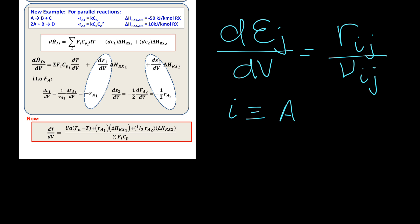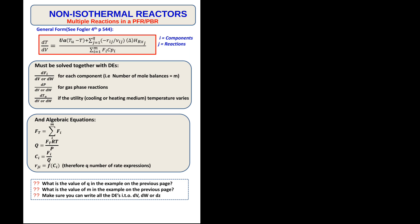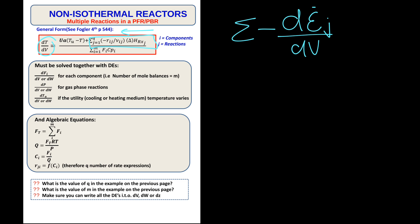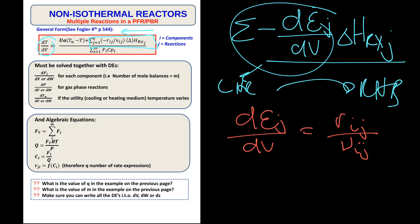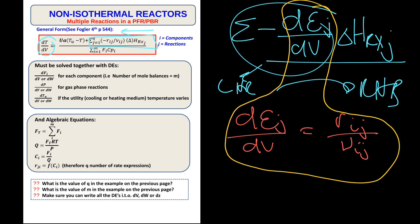Which of the two terms wins depends not only on the relative size of the two ΔHrxn values, but also hidden in the rate terms is the temperature dependence of the two rate constants. Reconciling with the general form given in Fogler, the second term in the numerator of the dT/dV slope is simply equal to the sum of −dεJ/dV multiplied by the enthalpy change of each reaction in that slice. The negative arises because this moves from the left-hand side to the right-hand side of the energy balance. We then employ the derived equation to write dεJ in terms of a component rate divided by its stoichiometric number.